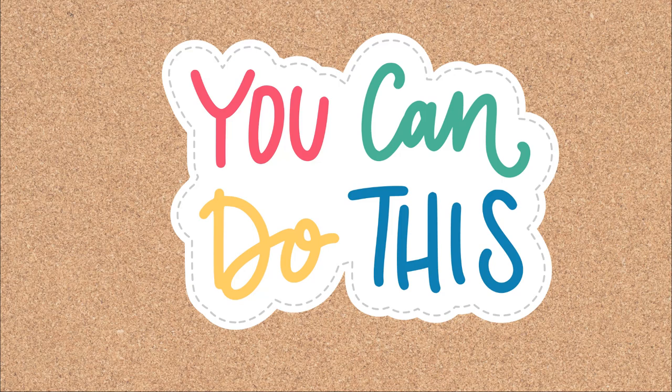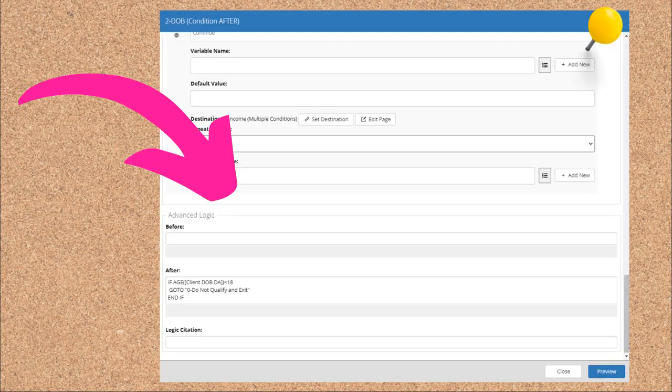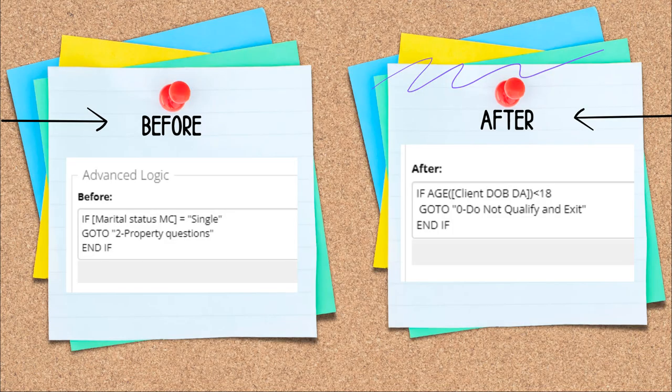The rules for writing properly formatted conditions are very similar to those for writing properly formatted sentences. Before we get into the specifics of the rules, let's talk about where the scripting happens. All conditional logic statements are written in the Question Design Editor under the Advanced Logic section. You can script conditions to be evaluated in two ways by AtoJ Author: before logic statements are evaluated before the page is displayed to the end user, and after logic statements are evaluated after the user has pushed a button. This is an important distinction to remember because it can affect the end user experience.